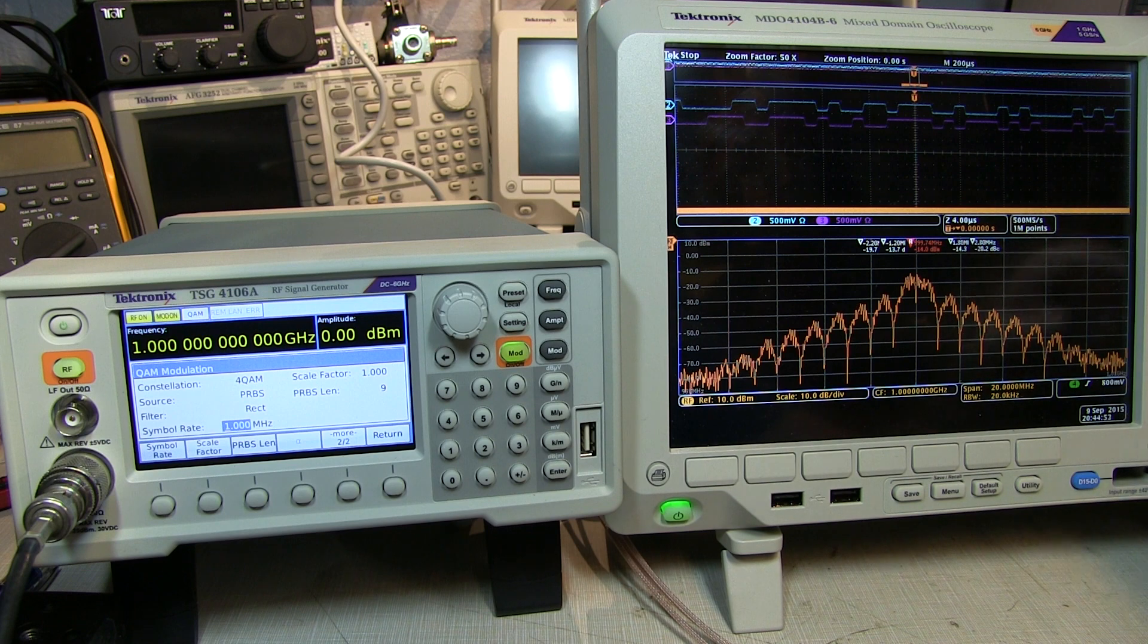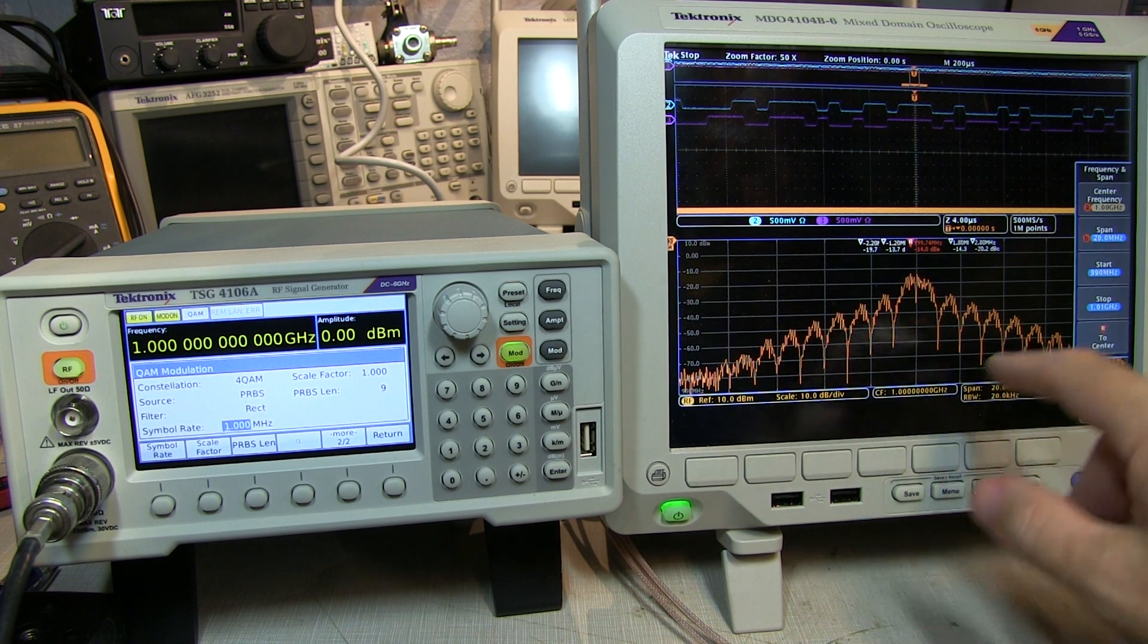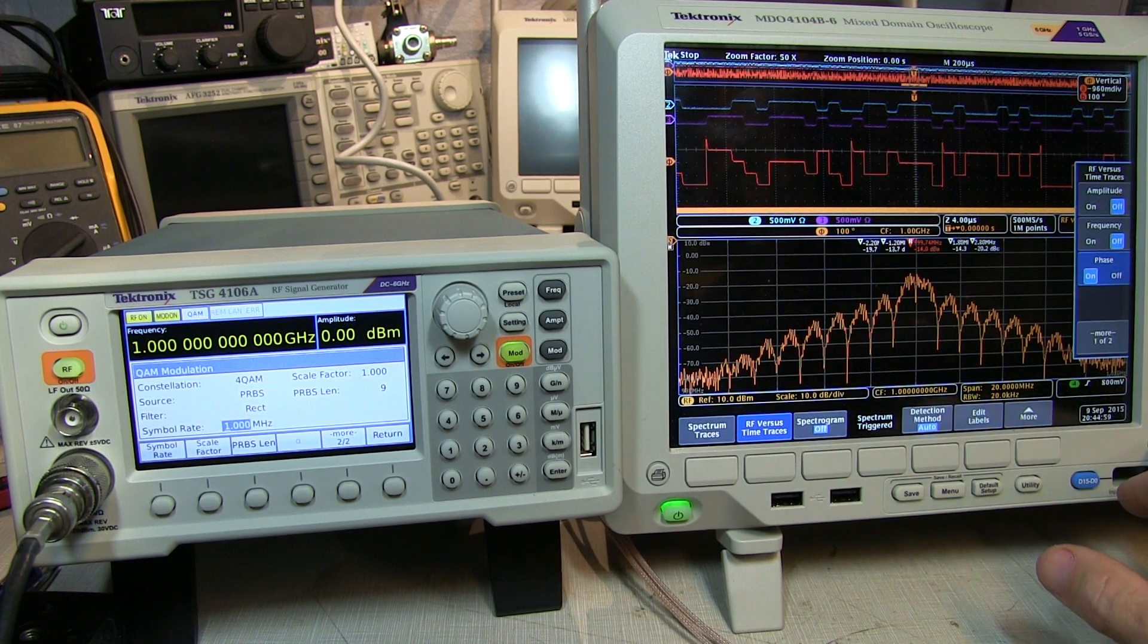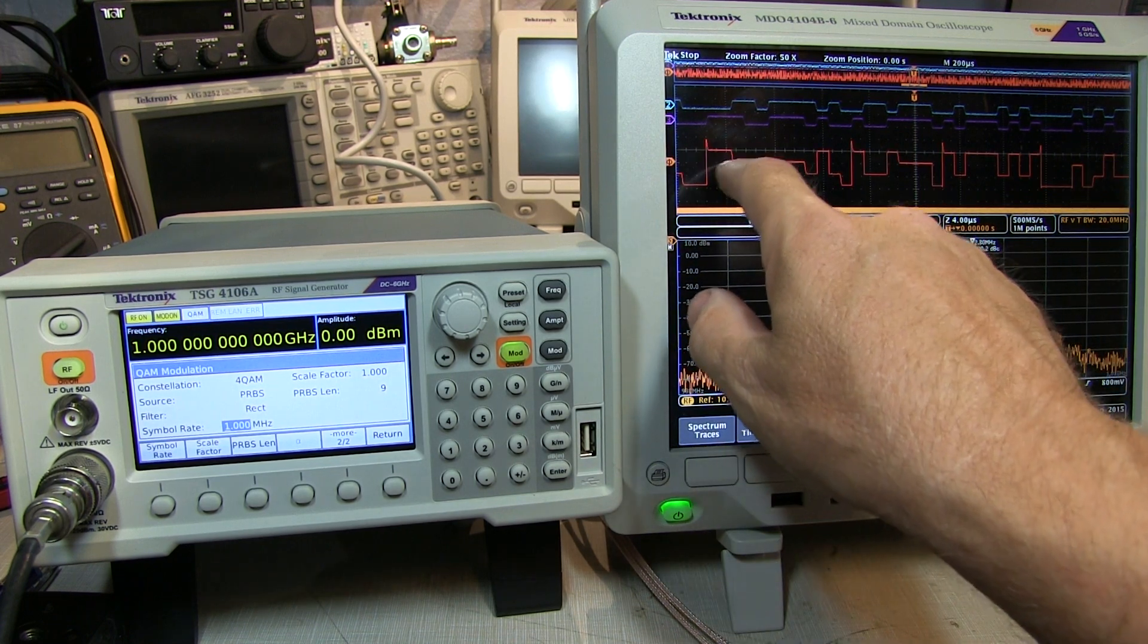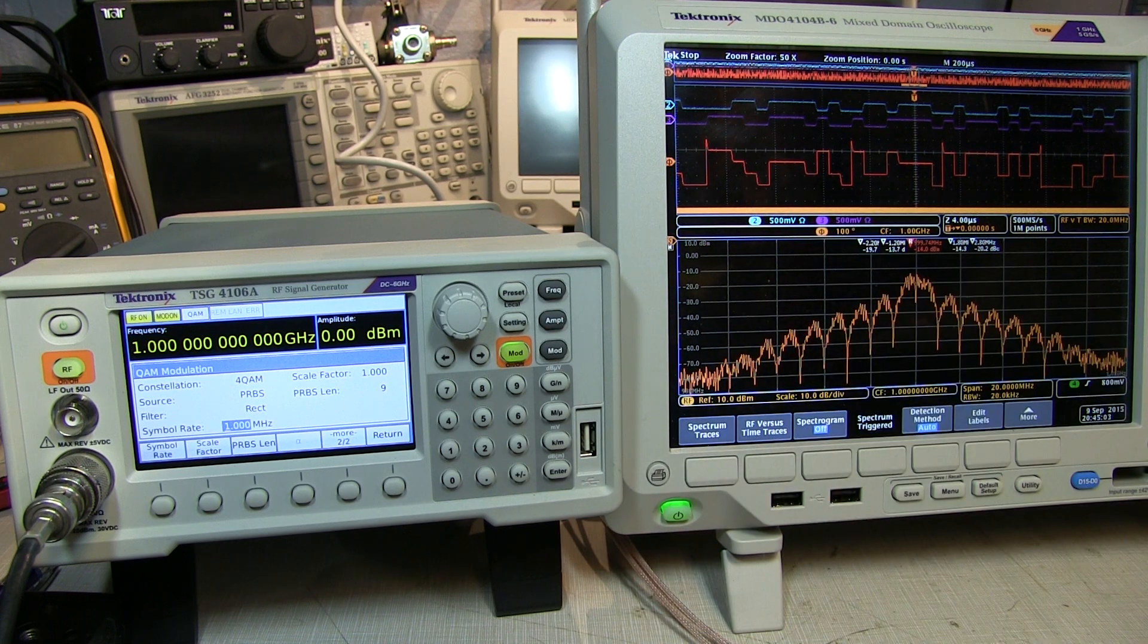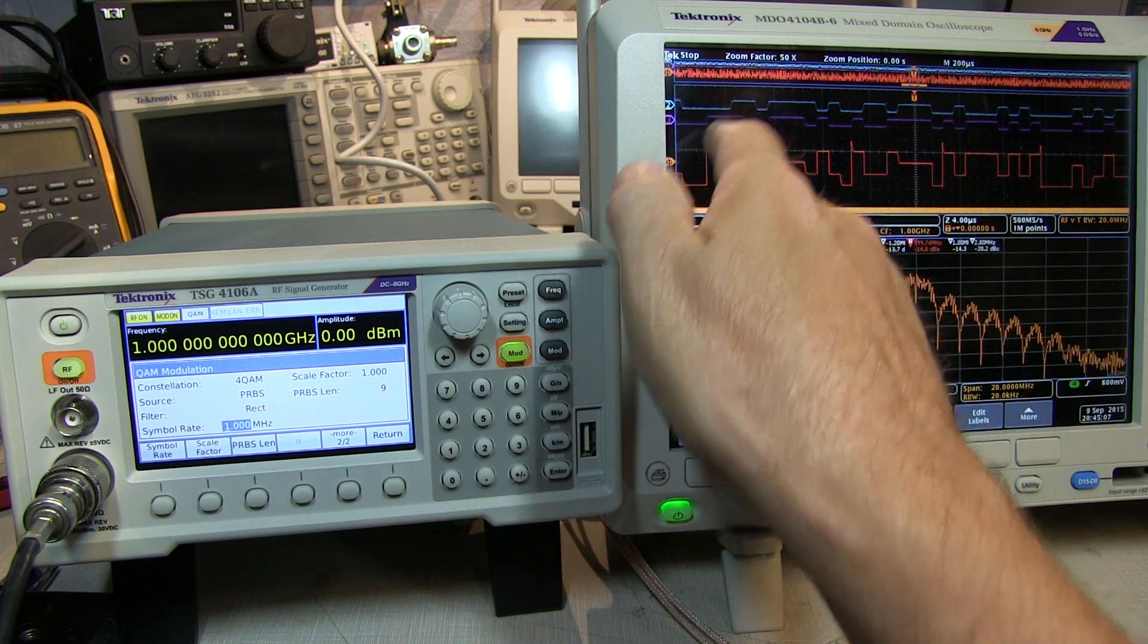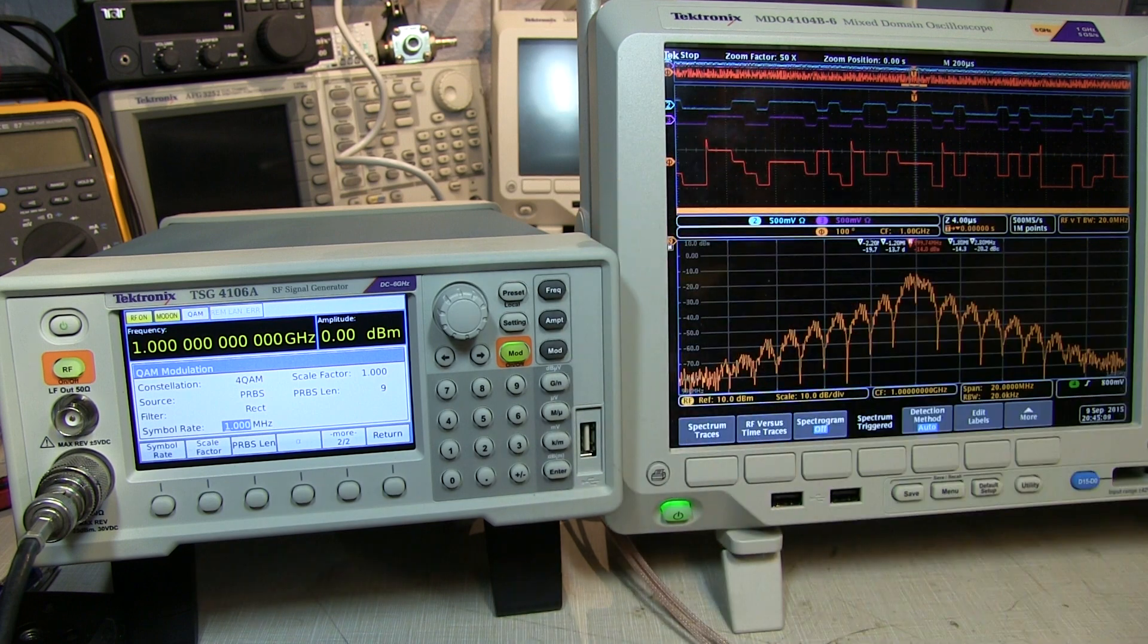In fact, if we go to our RF versus time traces, let's go and turn on phase versus time, we can actually see the four different phase steps that the carrier is going through and how they correspond to the four conditions of the I and Q waveforms.